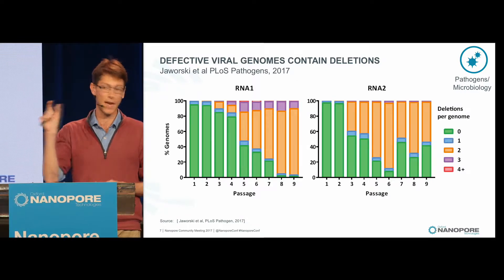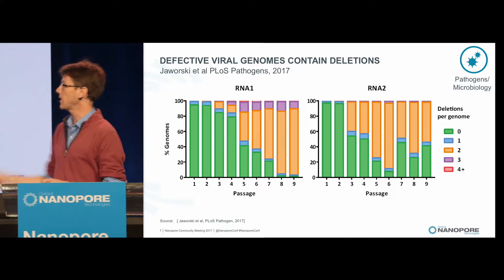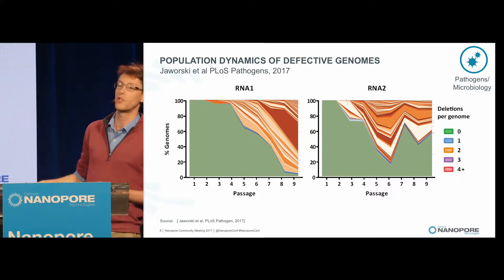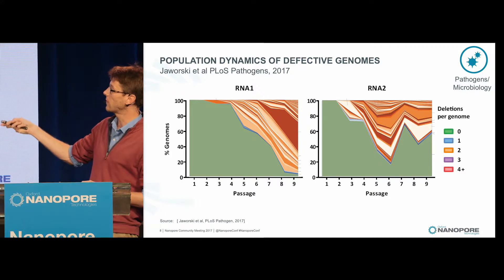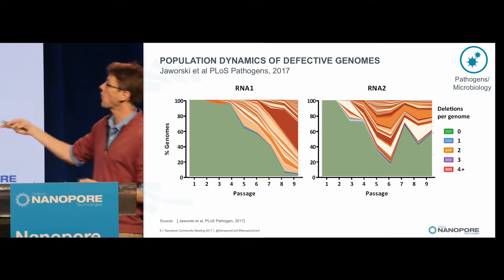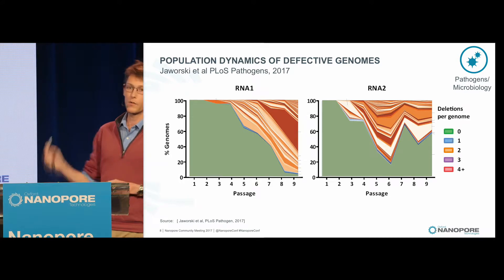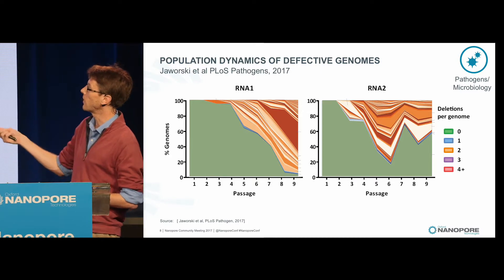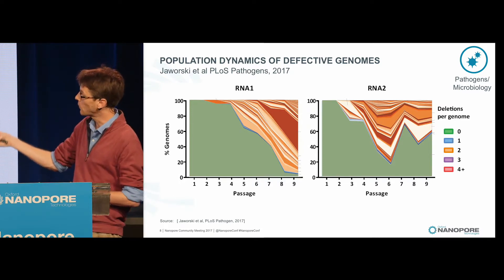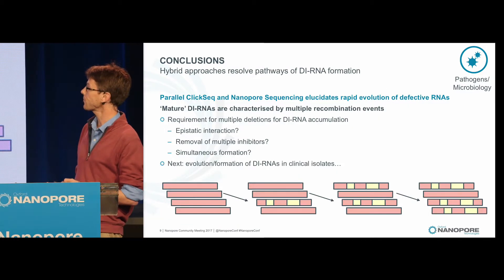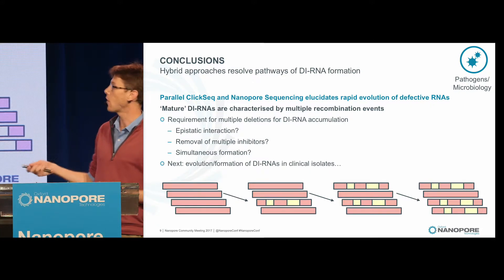We can go into more detail. Because we can characterize the specific nucleotide sequence of each deletion, we can categorize every unique genome. In this stacked area plot, green represents wild-type virus, and each shade represents a different unique genome with a different combination of deletions — orange is two deletions, blue is one. This gives us a fine tool to look at the diversity of defective RNAs evolving over time. If you'd sequenced this with Illumina you might find one or two point mutations, but only by examining defective interfering RNAs do you capture the full diversity in your viral population.